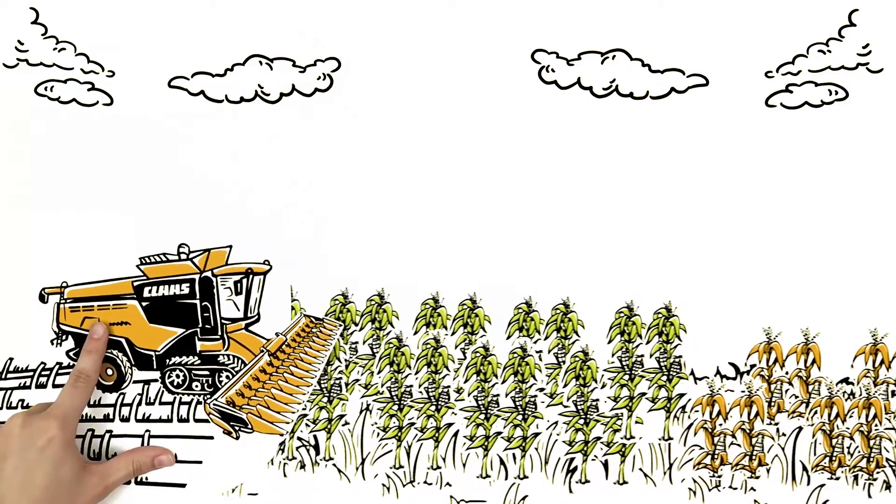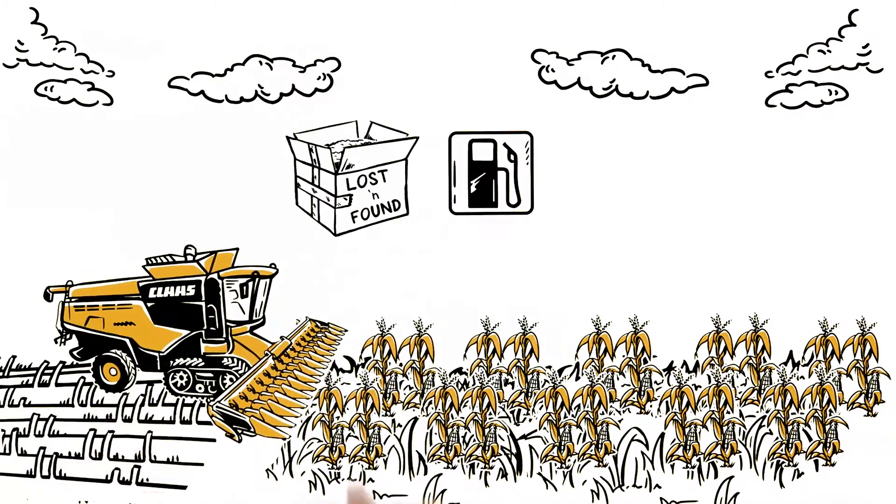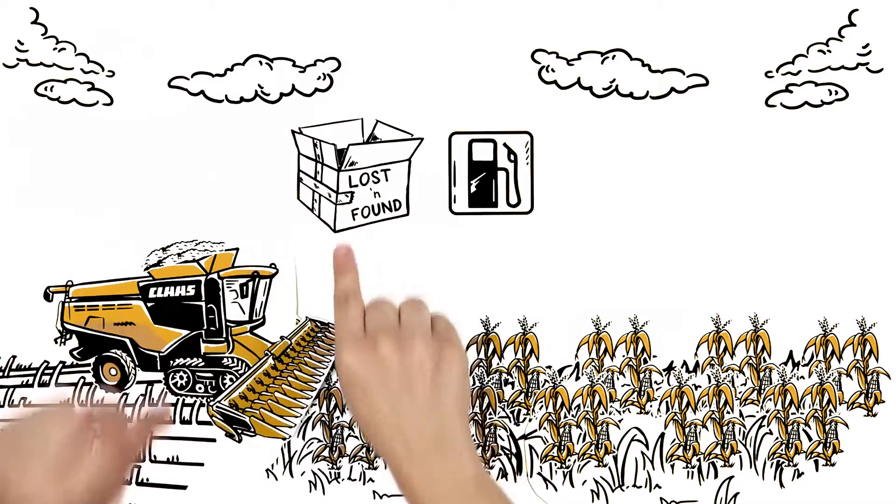As Luke's Combine enters a new zone, these systems adjust to improve fuel consumption, reduce grain loss, and maximize harvesting speed.